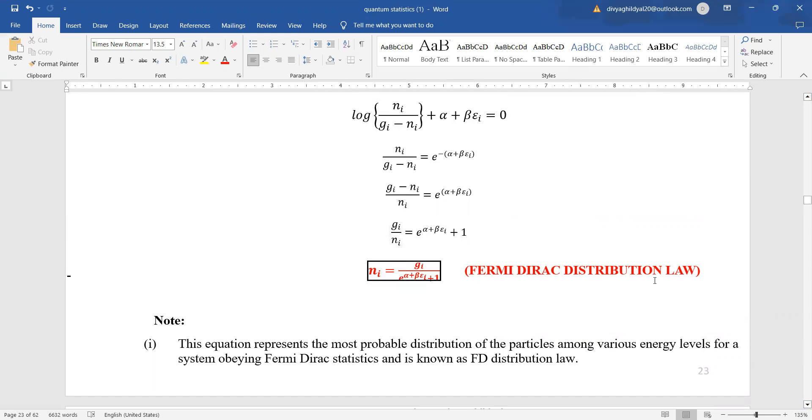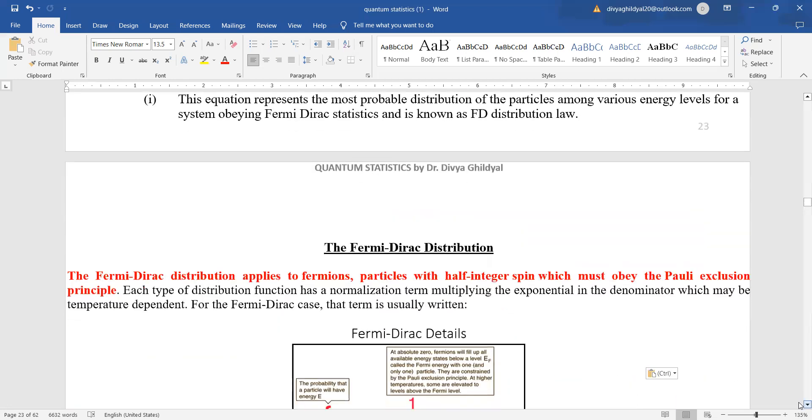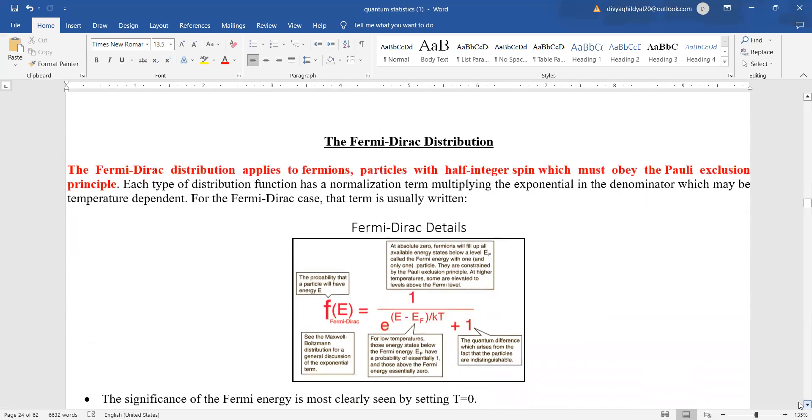So this equation represents the most probable distribution of particles among various energy levels for a system which is obeying Fermi Dirac statistics. So once again...